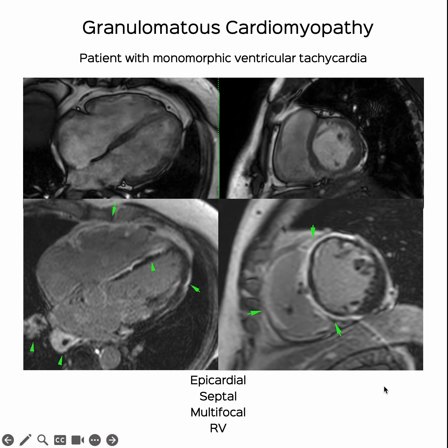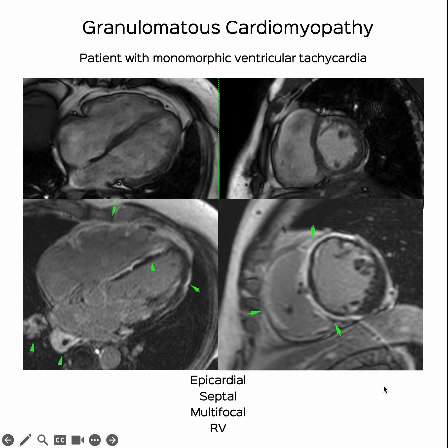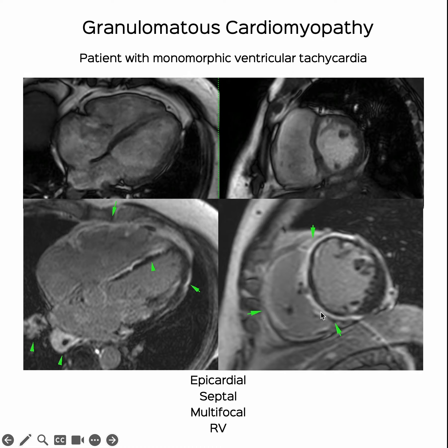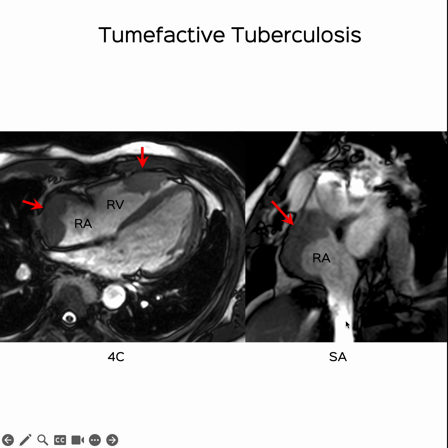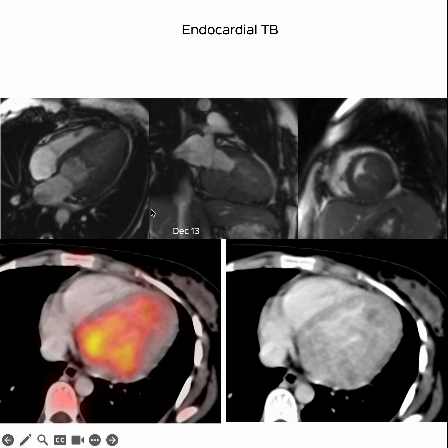Granulomatous cardiomyopathy, where TB simulates sarcoidosis with all the classic findings. It's tumefactive TB — mass-like lesions in the atrium and the ventricle extending into the cavity.